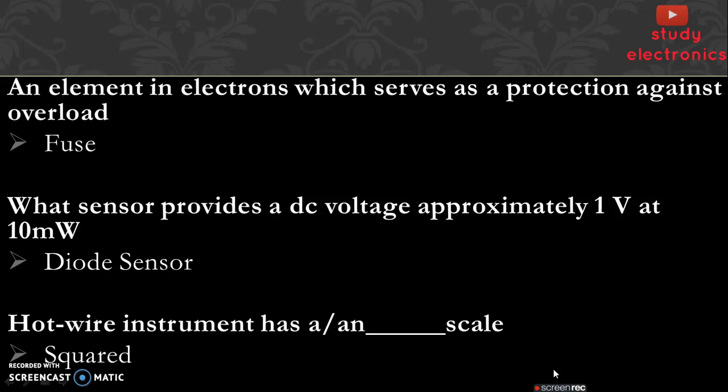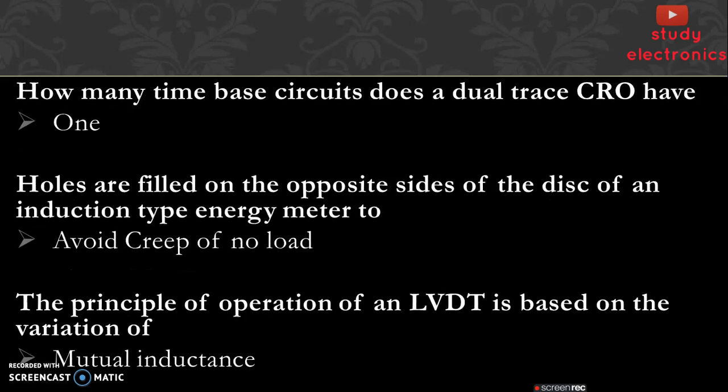Next question: hot wire instrument has a squared scale. Next question: how many time base circuits does a dual trace CRO have? One.